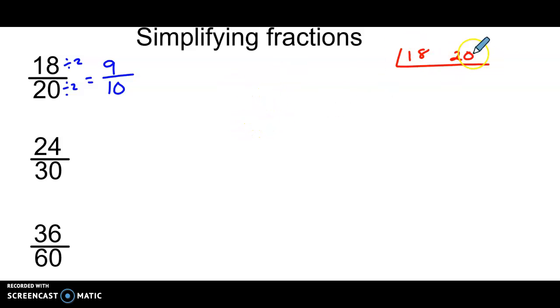Now, what is a factor I can pull out of both 18 and 20? Well, they're both even, so I can pull out a 2. 18 divided by 2 is 9. 20 divided by 2 is 10. Hey, look at something.